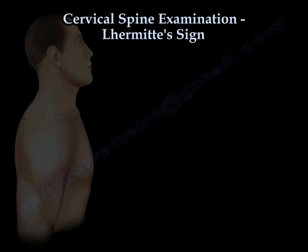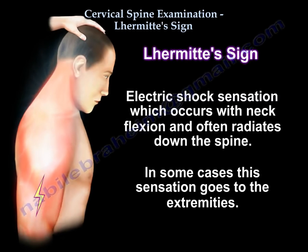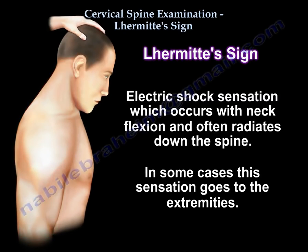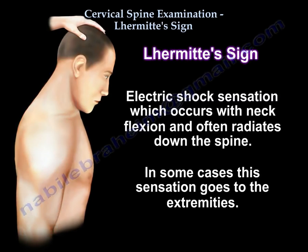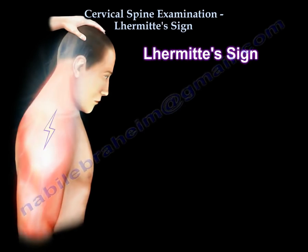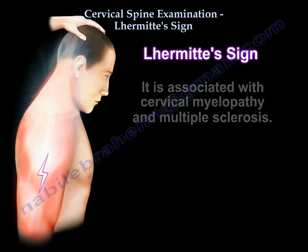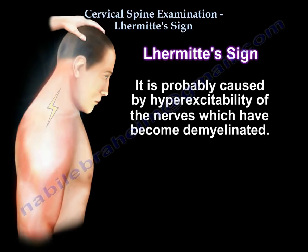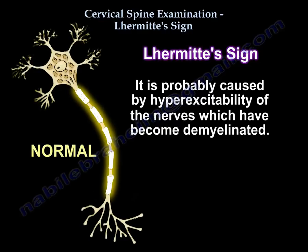Cervical Spine Examination: Lhermitte's Sign. Lhermitte's sign describes an electric shock sensation which occurs with neck flexion and often radiates down the spine. In some cases, this sensation goes to the extremities. It is associated with cervical myelopathy and multiple sclerosis, and is probably caused by hyper-excitability of nerves which have become demyelinated.